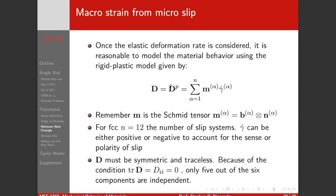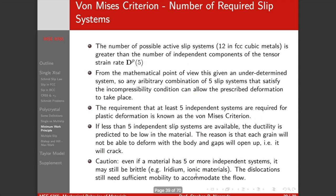Our deformation rate D has to be symmetric and traceless. Because the trace is equal to zero, only five out of the six components are independent. The von Mises criteria: the number of possible active slip systems is 12 in FCC metals, which is greater than the number of independent components of the strain rate tensor.